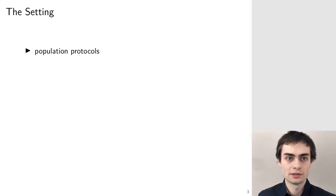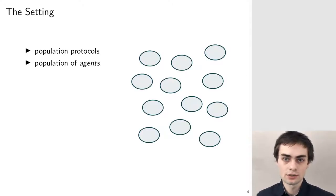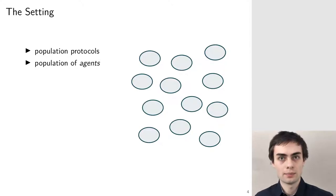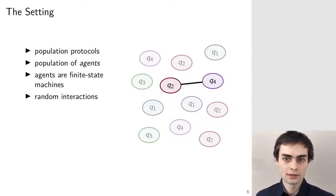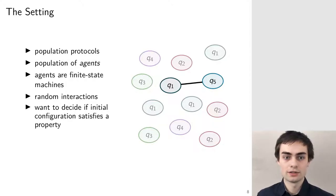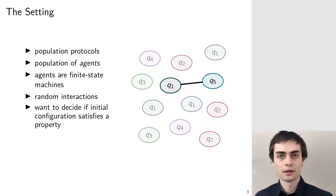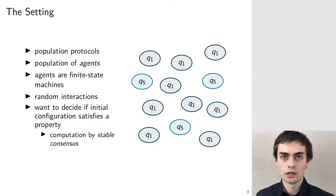Let's first talk about the general setting. We have population protocols, which means we have a population of agents. Each of them is in one of finitely many states. They interact randomly — a pair of agents interacts and moves to new states. The goal of the computation is to decide whether the initial configuration satisfies a given property. This is done by consensus: after some amount of time all agents have to agree on a common output, and that consensus must be stable — it must not be possible for any agent to change their opinion.